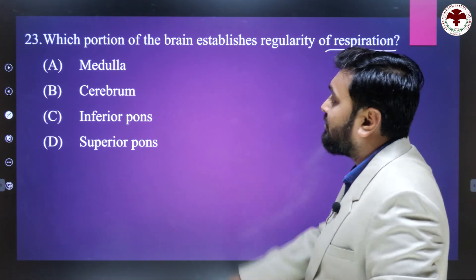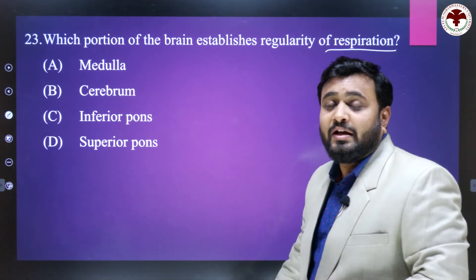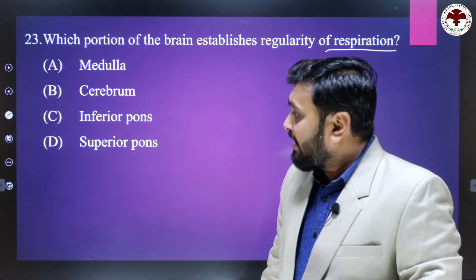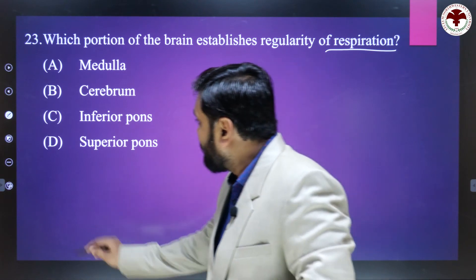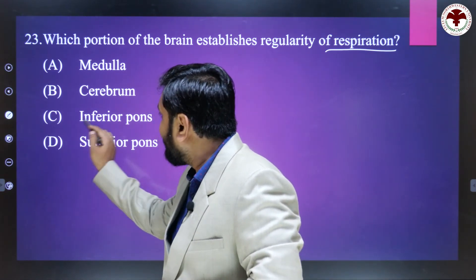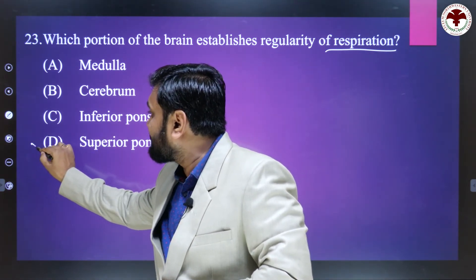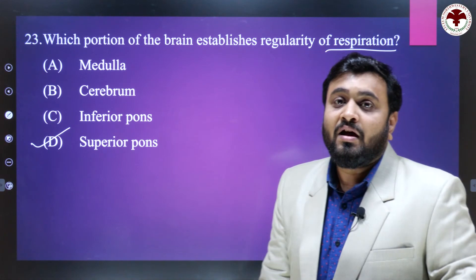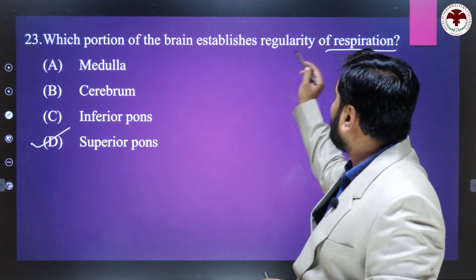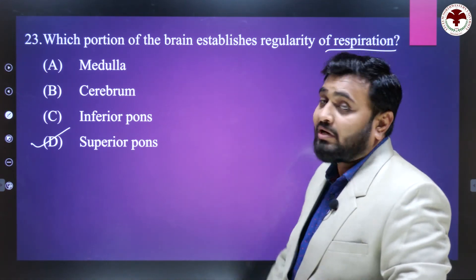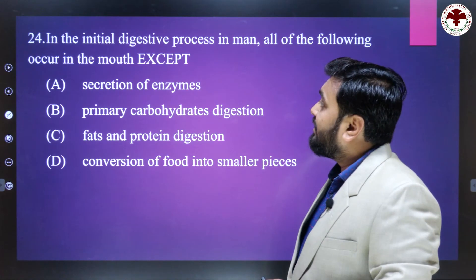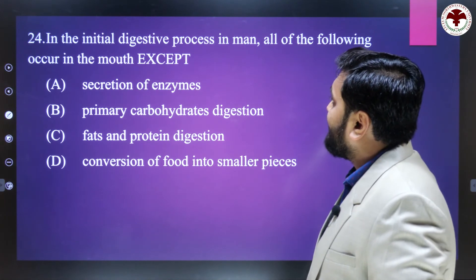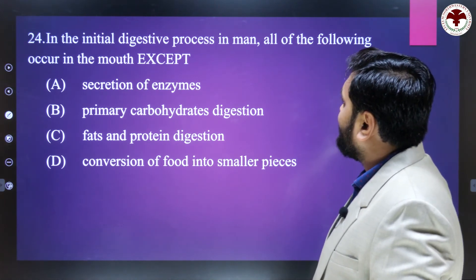Which portion of the brain establishes the regularity of respiration? The part responsible for the regularity of respiration is the pons, which has two parts — inferior and superior. The right answer is the superior pons, which is responsible for the regularity of respiration.